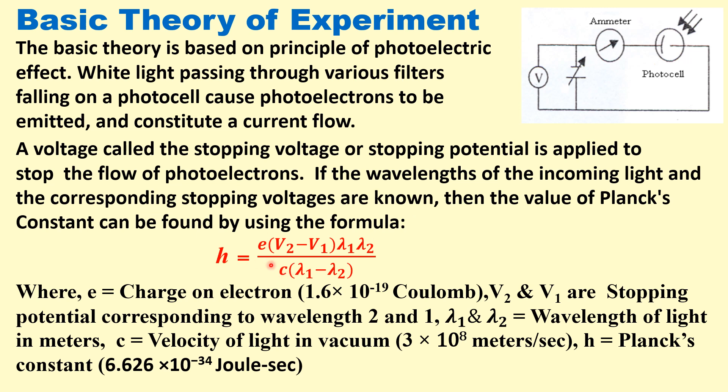H equals E times (V2 minus V1) times lambda 1 times lambda 2 divided by C times (lambda 1 minus lambda 2), where E is the charge on electron which is 1.6 into 10 to the power minus 19 coulomb. V2 and V1 are the stopping potentials corresponding to wavelength 2 and wavelength 1. Lambda 1 and lambda 2 are the wavelengths of light in meters, and C is the velocity of light in vacuum, that is 3 into 10 to the power 8 meter per second. H equals Planck's constant which is 6.626 into 10 to the power minus 34 joule second. That is the standard value.